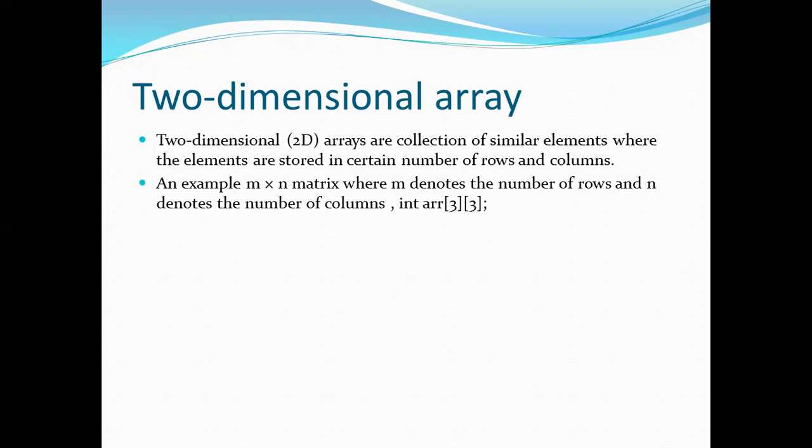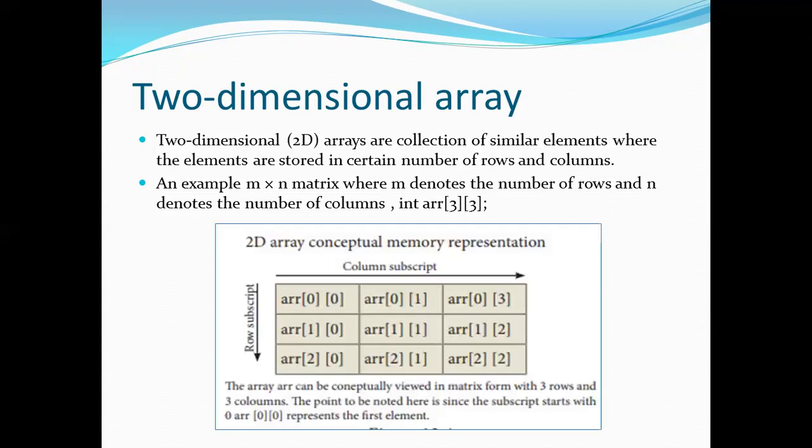For example, M cross N matrix. M is represented as row and N is represented as column. In this case, every memory is represented. The first element is A[0][0], A[0][1] is the second element, this is the third element.